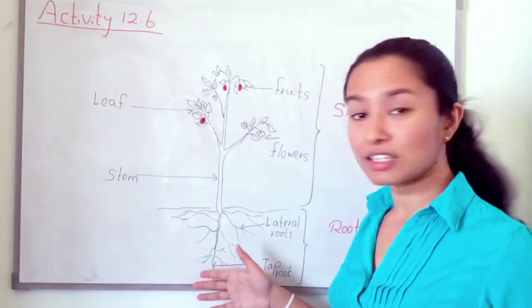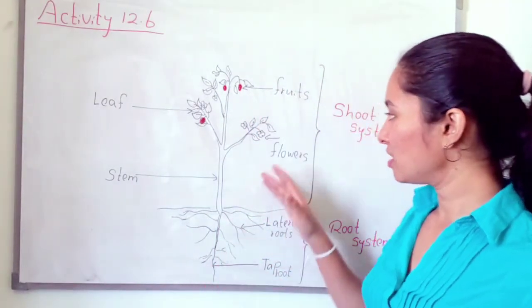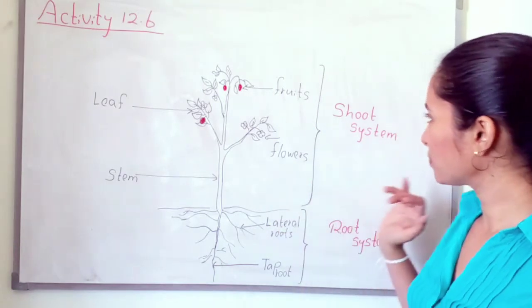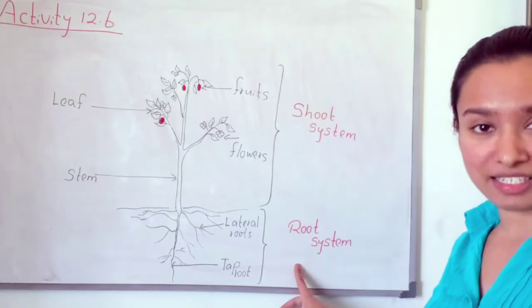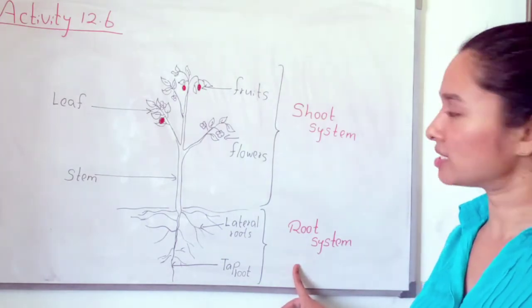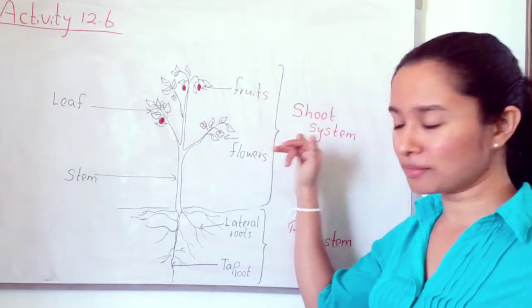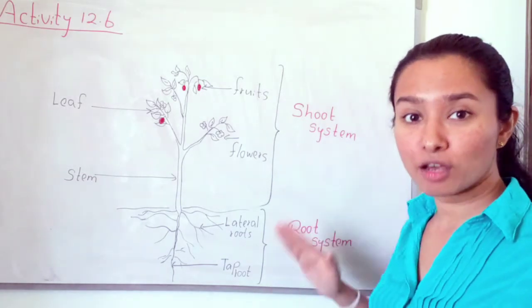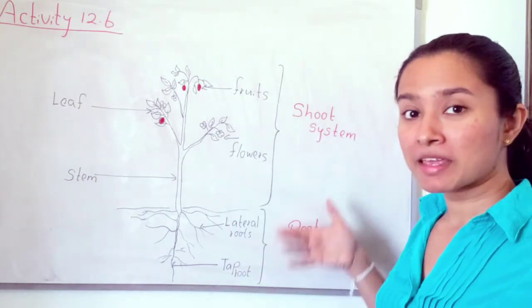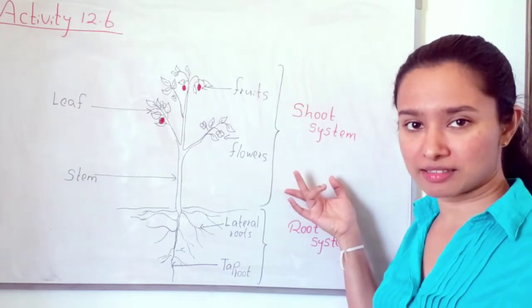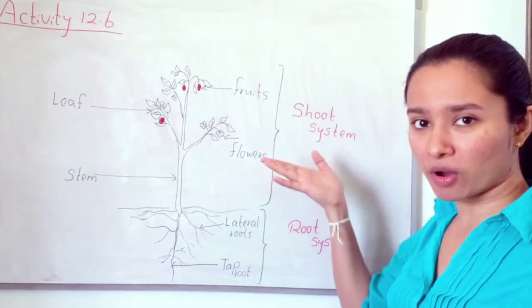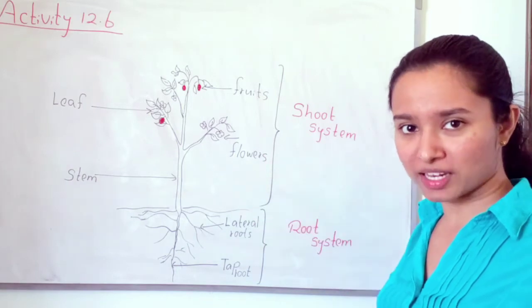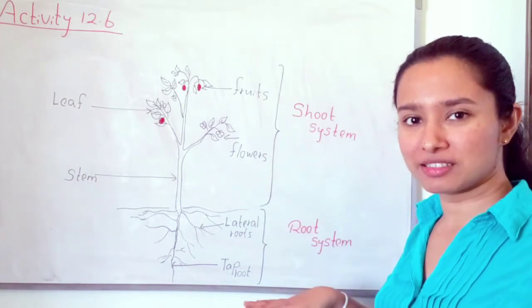This is the Commelina plant. There are two systems in this plant: the shoot system and the root system. Above the soil, we can see the shoot system, and below the soil, we can see the root system.